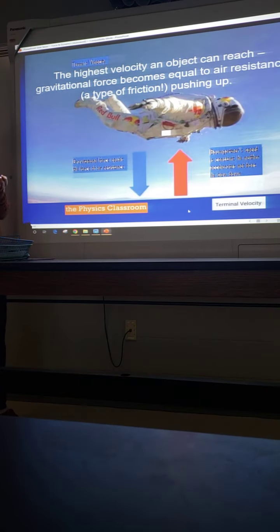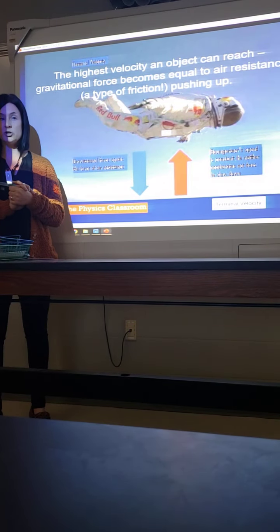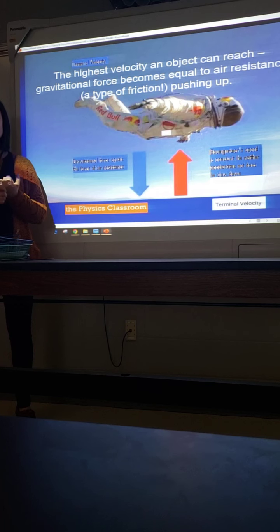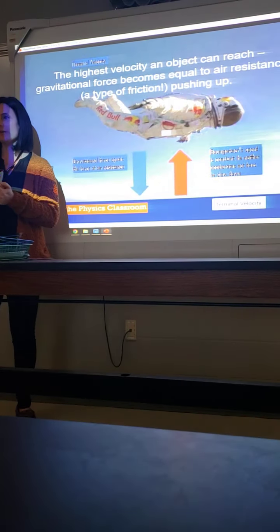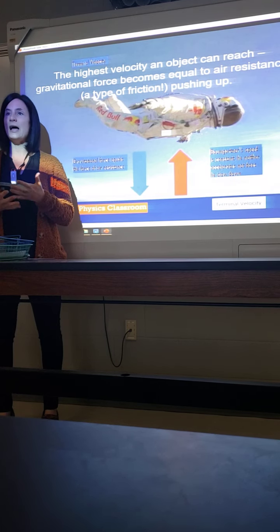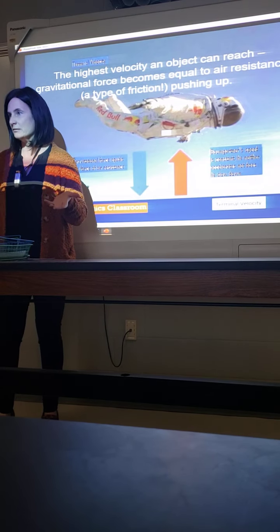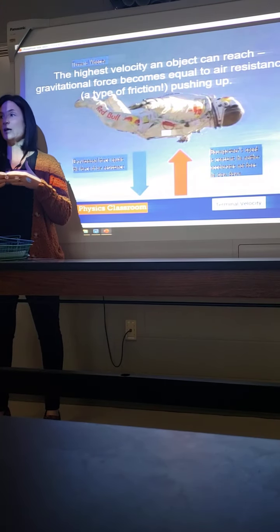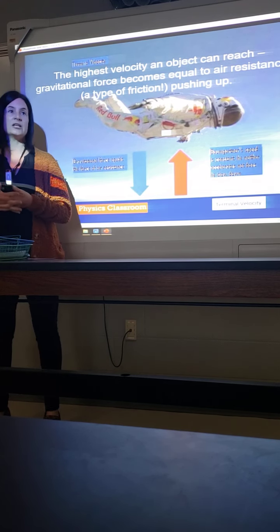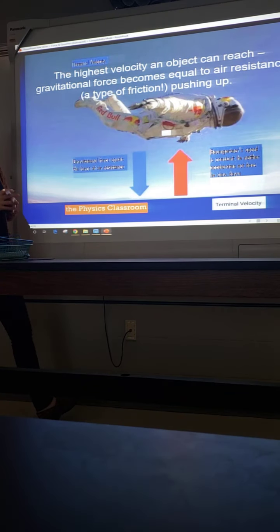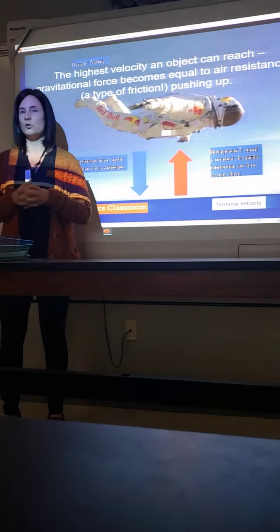We're going to watch a MythBusters episode on terminal velocity. Terminal velocity is the greatest velocity that an object can reach before it balances out and you don't get any more acceleration. We looked at this with the parachute skydiving simulation — when the arrows were unequal you saw acceleration still happening, and when the arrows equalized the object was still falling but at a constant rate. There is a maximum velocity an object will reach before it reaches equilibrium. If forces are balanced in opposite directions you won't get a change in motion — you can still have motion, but no more acceleration.